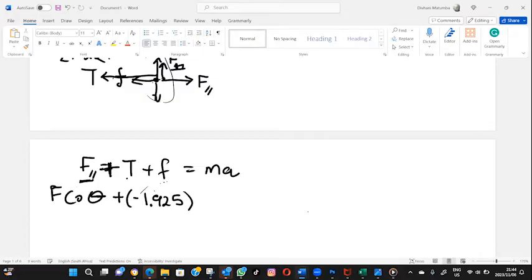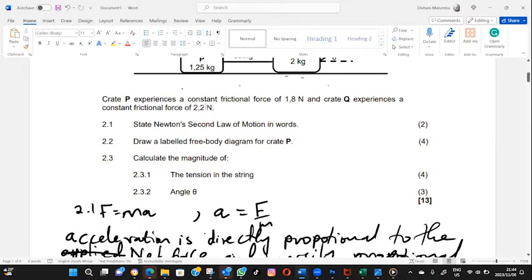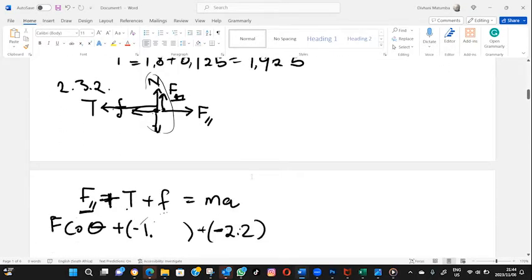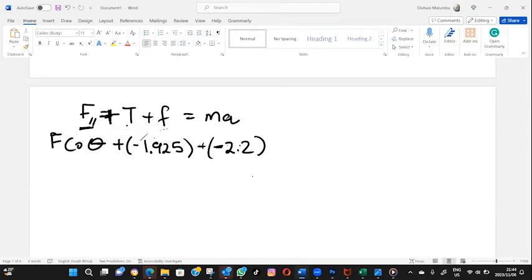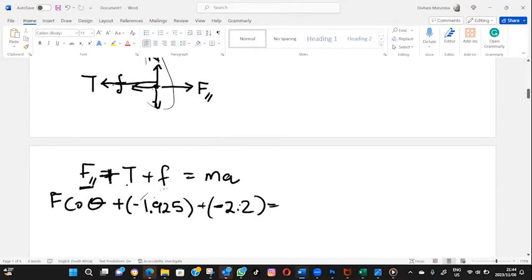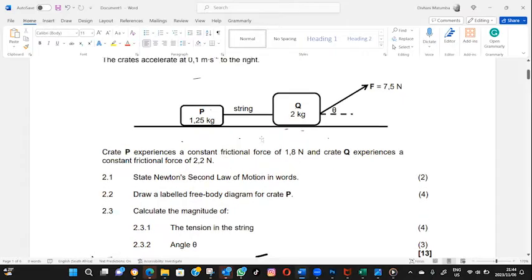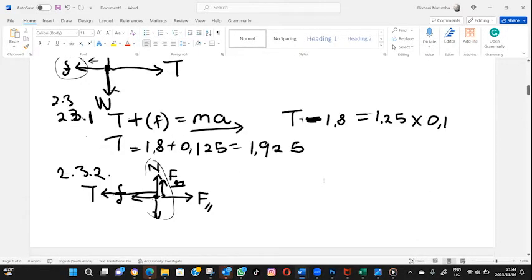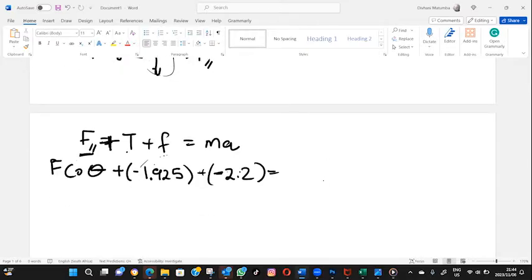Then plus friction as well, it is minus 2.2. Let me verify and see if that is the right amount. Yes, it is. So this will give us your mass is, let me check again, the mass is 2 and the acceleration of the system was given as 0.1.